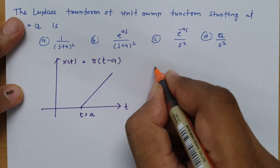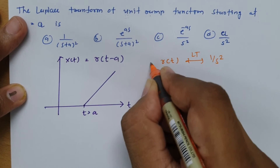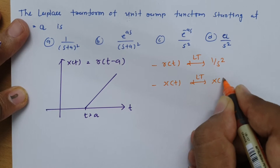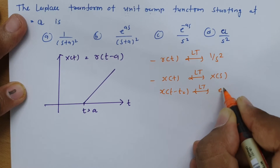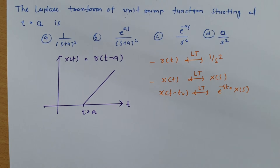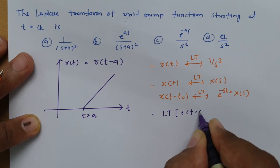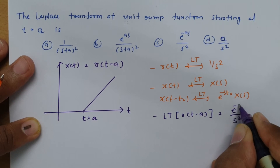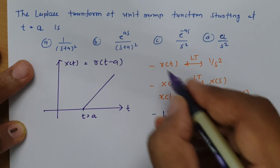As we know, for a ramp signal the Laplace transform is 1/s², and as per the shifting property, if x(t) has Laplace transform X(s), then x(t - t₀) has Laplace transform e^(-s·t₀) · X(s). Applying both properties, the Laplace transform of r(t - a) is e^(-as)/s². If you observe the options, this is the correct answer.